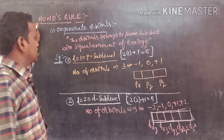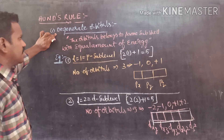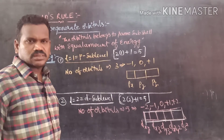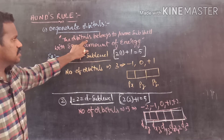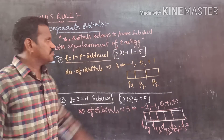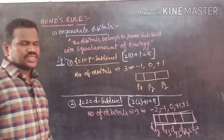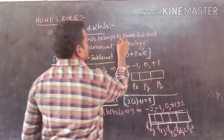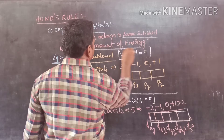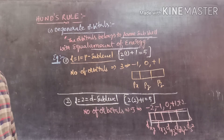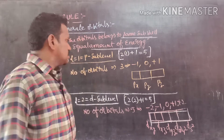Let us come to Hund's rule. First of all, we are going to learn what is the meaning of degenerate orbitals. The orbitals belong to the same shell and the same subshell with equal amount of energy. The energy of an orbital is calculated by the N plus L value.